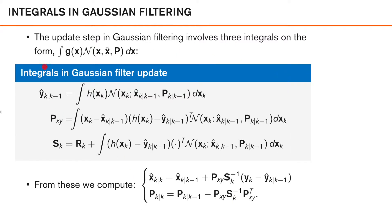Similarly, in the update step, we have these three integrals, that are also on the same form. All of these take a nonlinear function times a Gaussian, just as we did in the prediction step. In this case, the integrals calculate the predicted measurement, the cross covariance between the state and our measurement, and the covariance of our measurement, or the covariance of our innovation, which is the same. Once we have solved or approximated these components, we can approximate our posterior as Gaussian with this mean and covariance that we get from using the ordinary Kalman filter update equations.